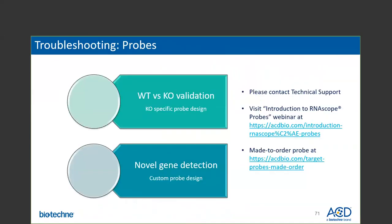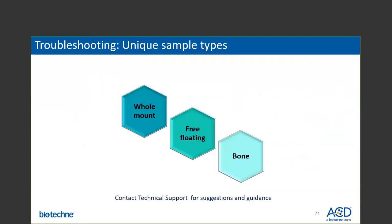For probe-related troubleshooting, please contact us for knockout validations — we have thousands of probes in inventory and can help ensure the probe you select is specific for your wild-type versus knockout validation. Similarly, if you are working with a novel gene and no catalog probe is available, submit your request via our website to perform a design feasibility test and our probe design team will contact you shortly. We also provide recommended sample preparation protocols for most commonly used sample types. For unique sample types such as whole mount, pre-floating or bone, please contact us for suggestions and guidance.